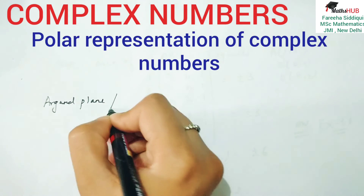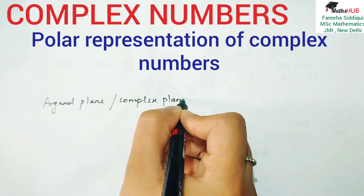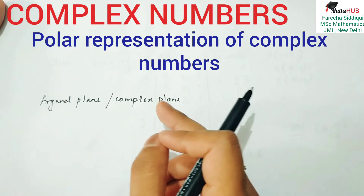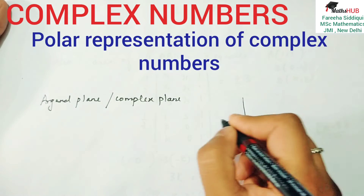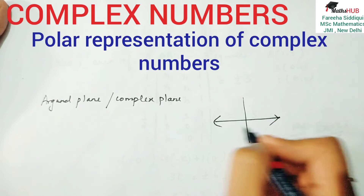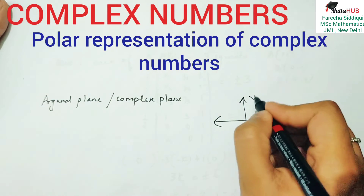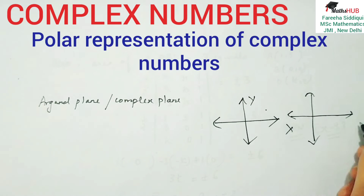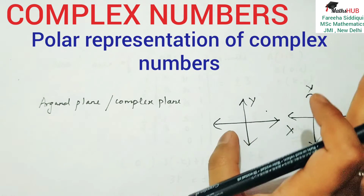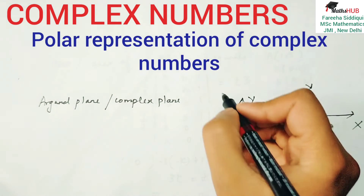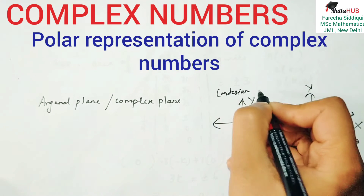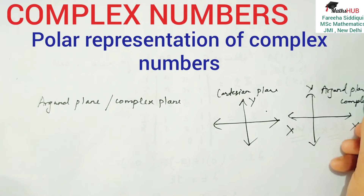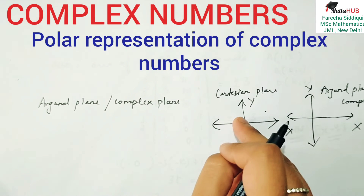Argand plane or complex plane. In order to plot a complex number, we need a plane which is known as the complex plane or Argand plane. Jaise hamare paas Cartesian plane hota hai — two-dimensional cheez ko plot karne ke liye — we used to plot on x-axis and y-axis. That was our Cartesian plane. Similarly, we have a complex plane — yeh bilkul Cartesian jaisa hi hai. Here we have our Cartesian plane, and this is our Argand plane.